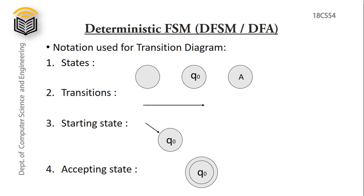Let's understand the notations used for a transition diagram. A state is represented by a circle, named Q0 or any conventional name. Transitions are represented by arrows. The starting state is represented by an arrow over the circle. Finally, accepting states are represented by double circles — any state with a double circle is considered an accepted state.